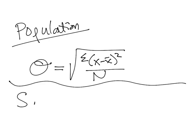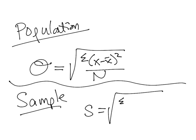If we are dealing with a sample — and in real life the majority of our surveys or data collection is a sample — we find the standard deviation using the formula S, the sample standard deviation, which equals the square root of the sum of (x minus x-bar) squared, all over N minus 1. So our denominator is now sample size minus 1. That's the only difference in the formulas.